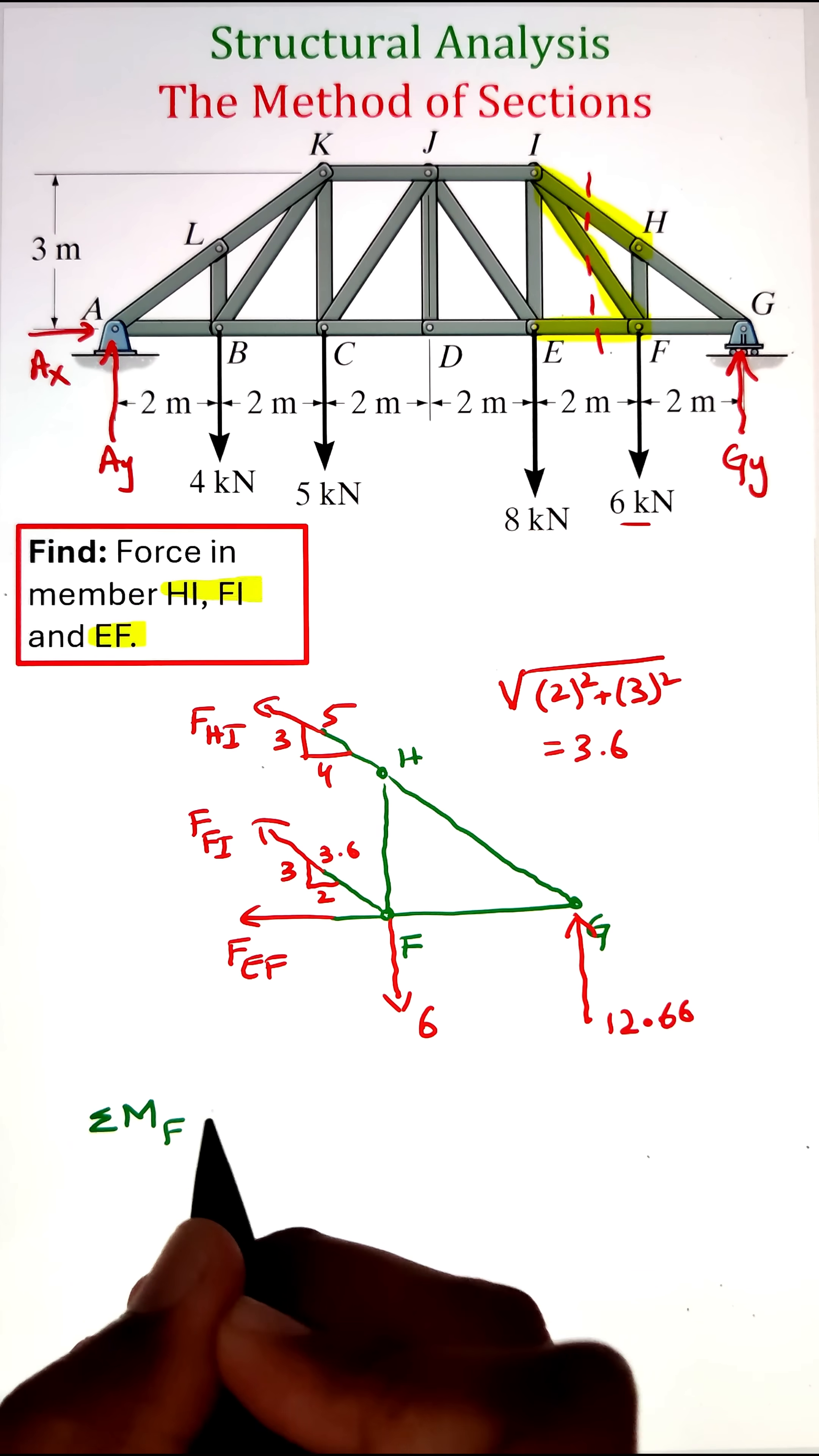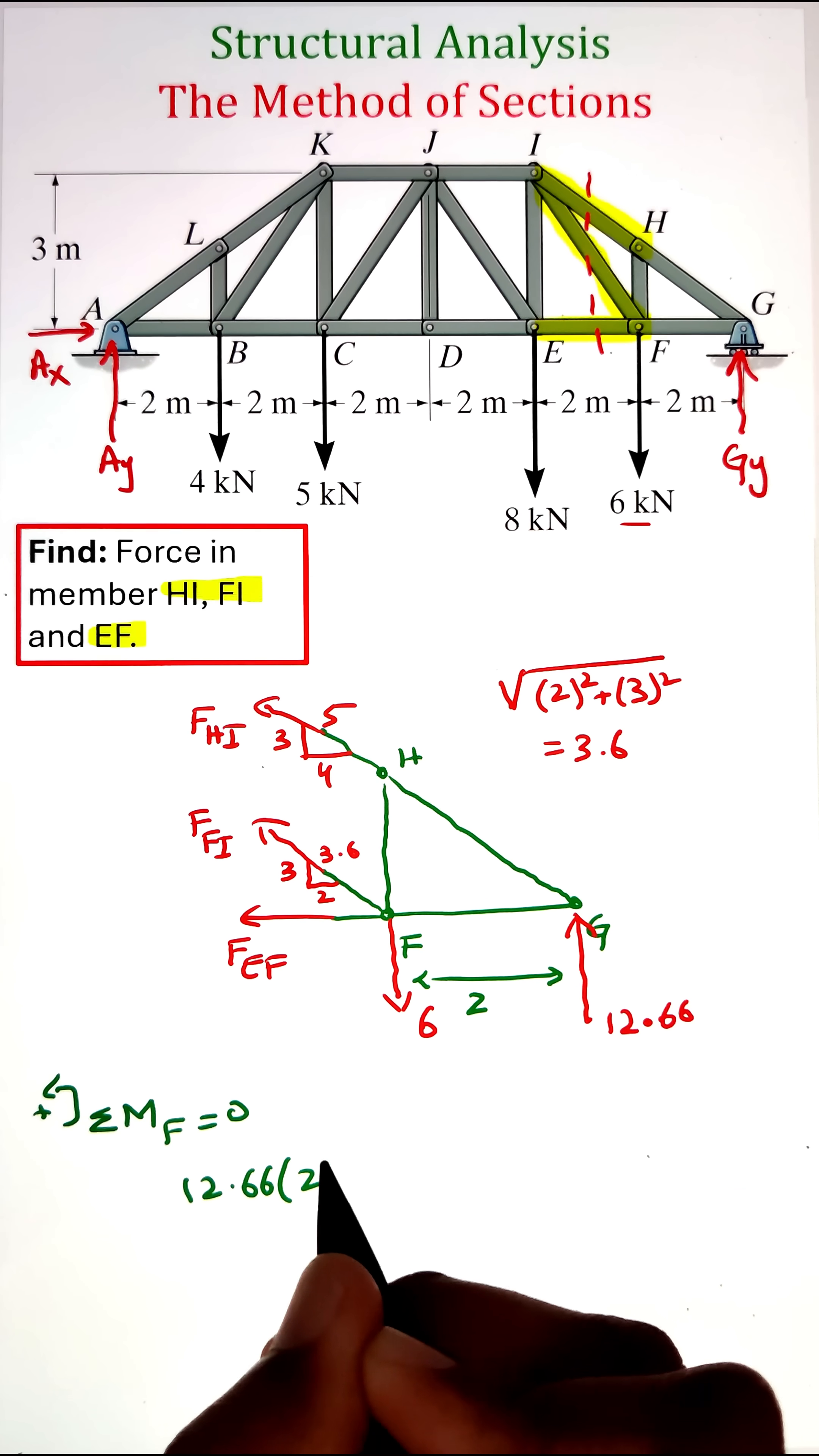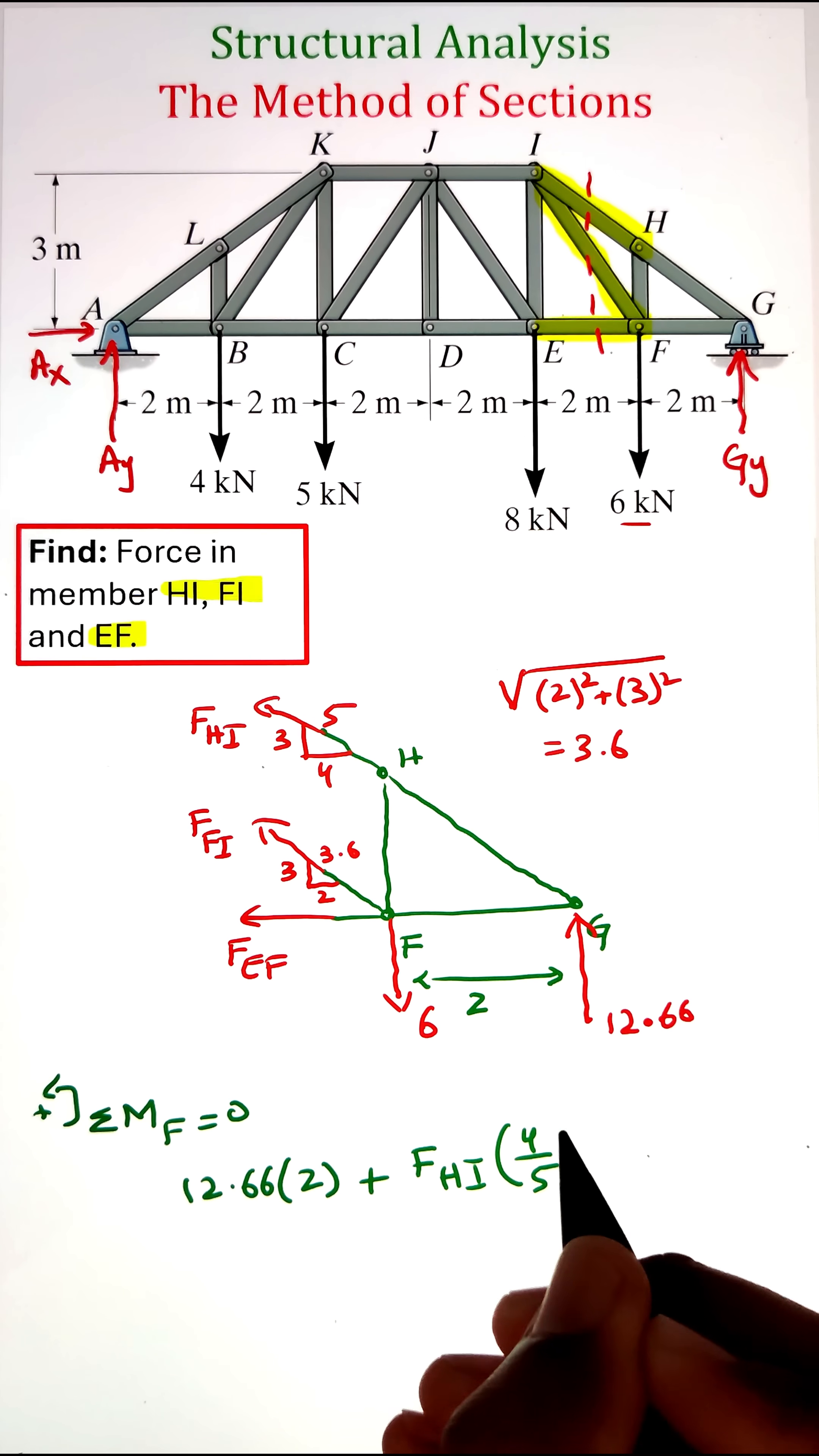We have a support reaction at G that will create a counterclockwise moment with a moment arm of 2. The 6 kilonewton force, the force in member EF, and the force in member FI won't create any moment since they pass through point F. The only other force that will create a moment is the horizontal component of force FHI with a moment arm of 1.5.